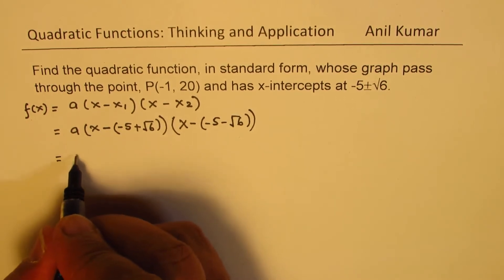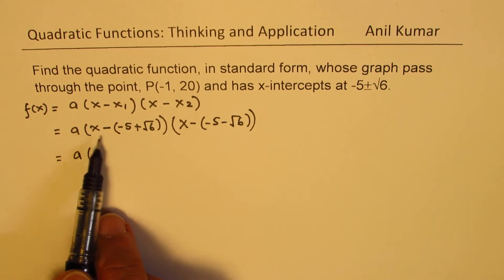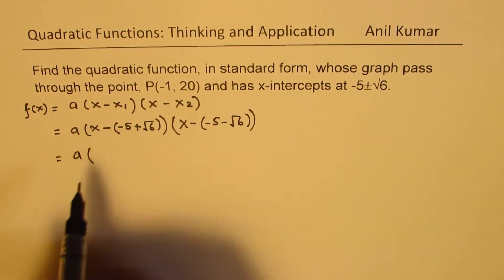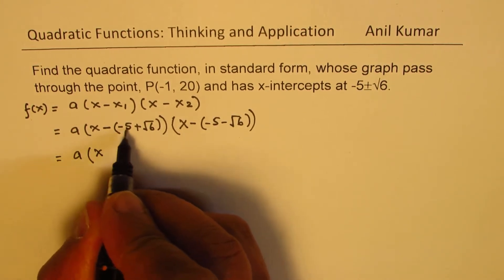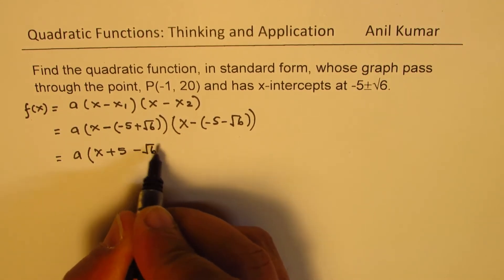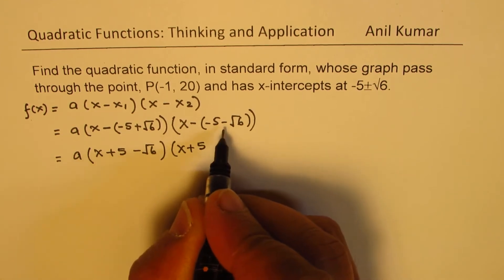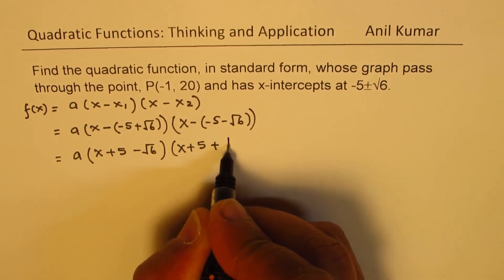So if you expand, what do you get? Well, this is... let's expand this portion first. We get (x - (-5) is +5) and that becomes minus √6, times (x + 5) minus minus becomes plus √6, correct?